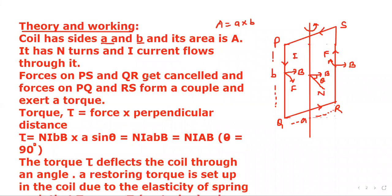Forces on PS and QR get cancelled, and forces on PQ and RS form a couple and exert a torque. Forces on this line and this line act along the axis of the coil. Being collinear, equal, and opposite, they get cancelled.